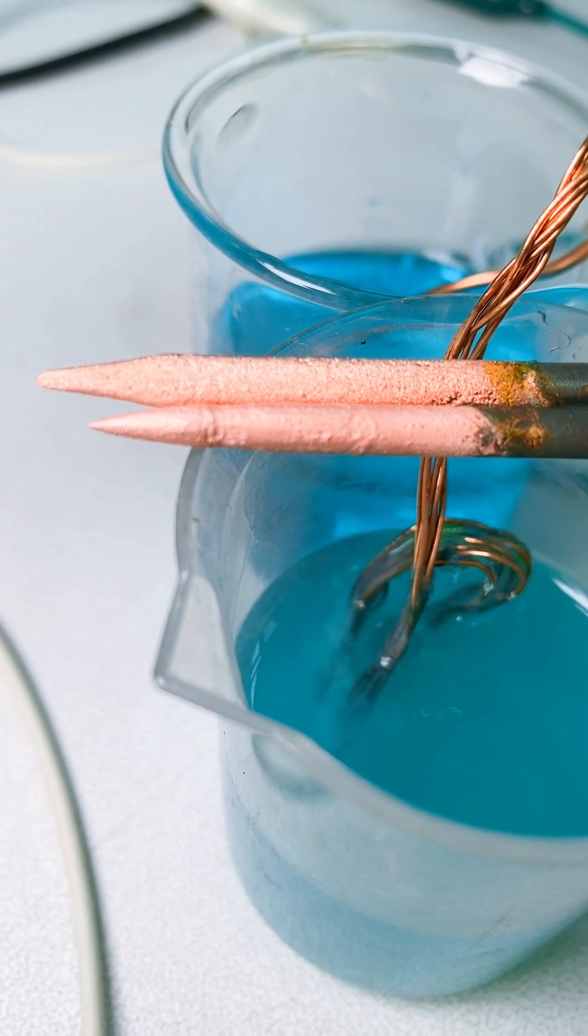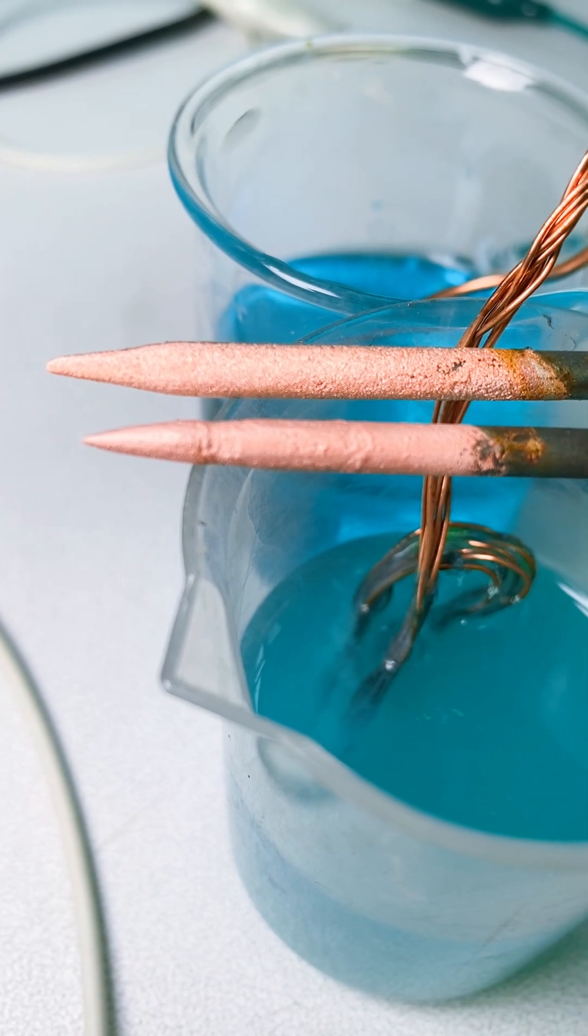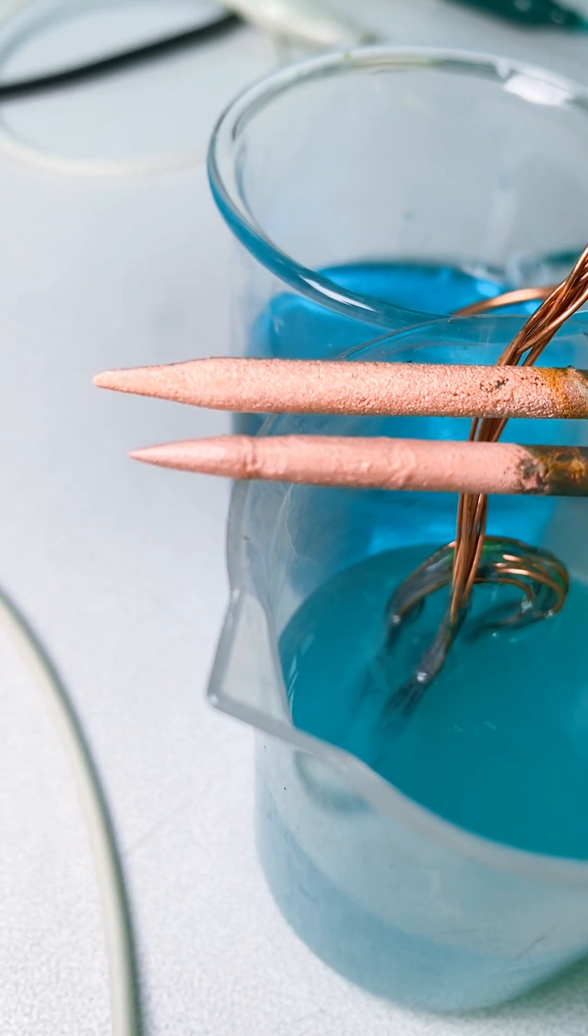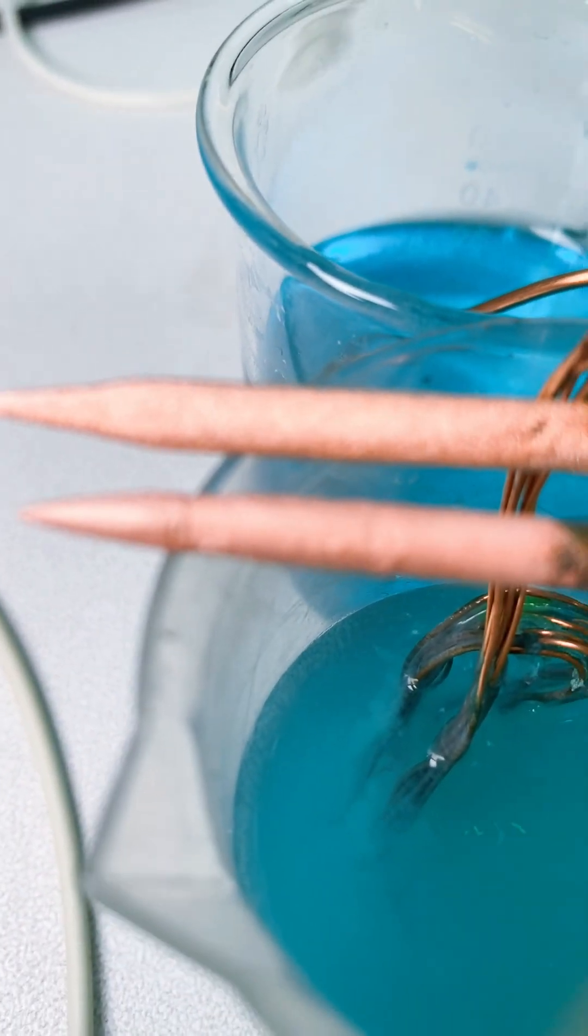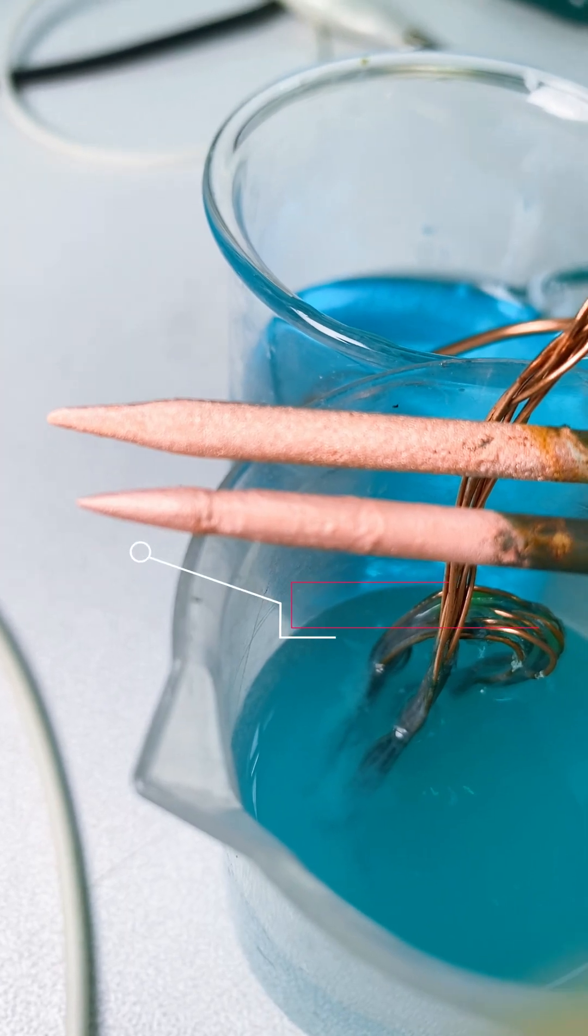Third, it can reduce internal stress. Adding an appropriate amount of gelatin can help reduce the stress inside the electroplating layer and improve the durability of the coating.